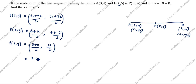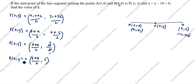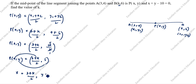So P(x, y) is equal to (3 plus k) divided by 2, comma 5. Therefore, x is equal to (3 plus k) divided by 2, and y is equal to 5.